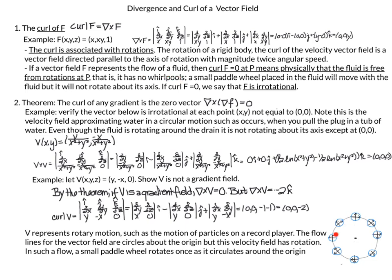A small paddle wheel placed in the fluid will move with the fluid in the circular motion, but its orientation — where the arrow is pointing up — will stay pointing up all through the circle. And if curl of f equals 0, we say that f, the vector field, is irrotational. It doesn't cause anything to rotate.